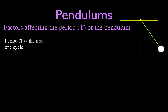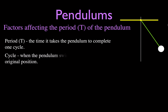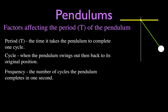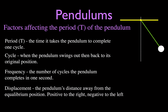We have some special terms you should be aware of. One is the period — capital T — which is the time it takes for the pendulum to complete one cycle. A cycle is when the pendulum swings out and back to its original position. The frequency is the number of cycles per second, and the displacement or amplitude is the amount that the pendulum is pulled back from the equilibrium position. To the right is generally positive, and to the left is negative.